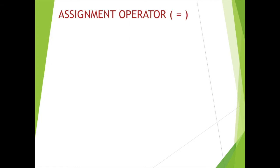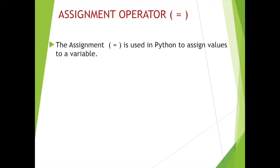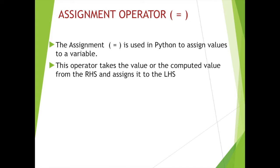The assignment operator is denoted with the equal to symbol. It is used in Python to assign values to a variable. To store values in a variable, we take the help of the assignment operator, which is the equal to symbol. The operator takes the value or the computed value from the right-hand side and assigns it to the left-hand side.